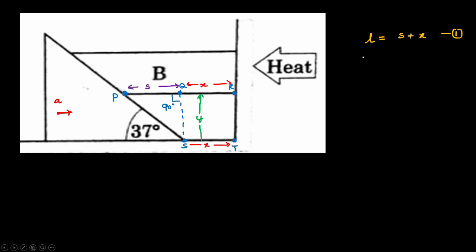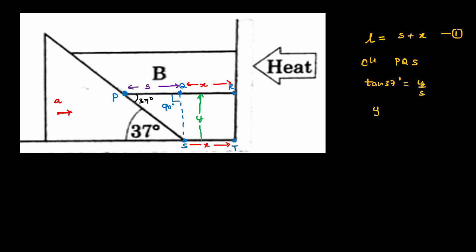The length l of the bar runs from point P to point R, so we have l = s + x — call this Equation 1. In triangle P-Q-S, since the wedge angle is 37 degrees, tan 37° = y/s, giving y = (3/4)s, since tan 37° = 3/4. Call this Equation 2.